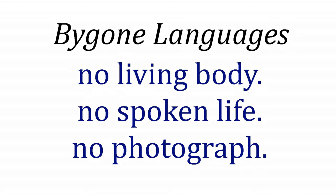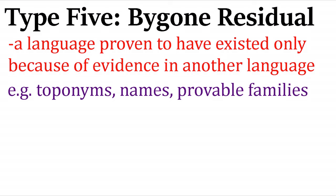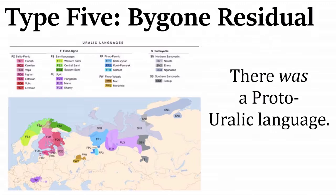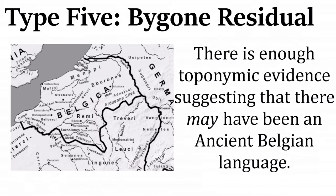Without a lexicon or grammar, a language may as well be completely lost to mortality — like the thousands of unknown people from 19th century photographs, not completely bygone but close. A 'bygone' language has no living body, no spoken name, and no photograph to be seen — completely cessated, with written evidence lost to time or never existing. A 'bygone residual' language is proven to exist through evidence that only survived in another language: think toponyms, first names, or proto-languages proven by their daughter languages. We know Proto-Uralic existed — there is no speaker community and no written evidence, yet evidence survives in the Uralic family.